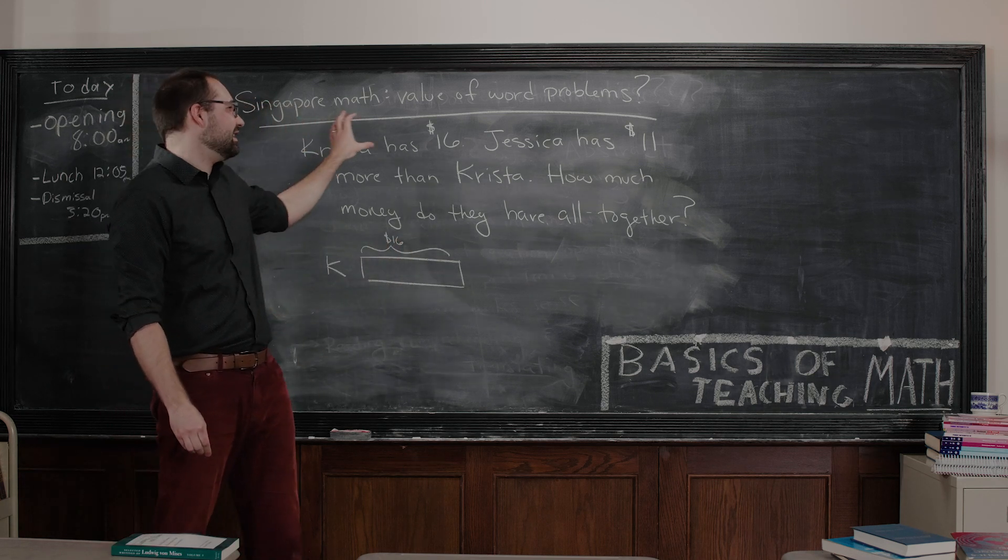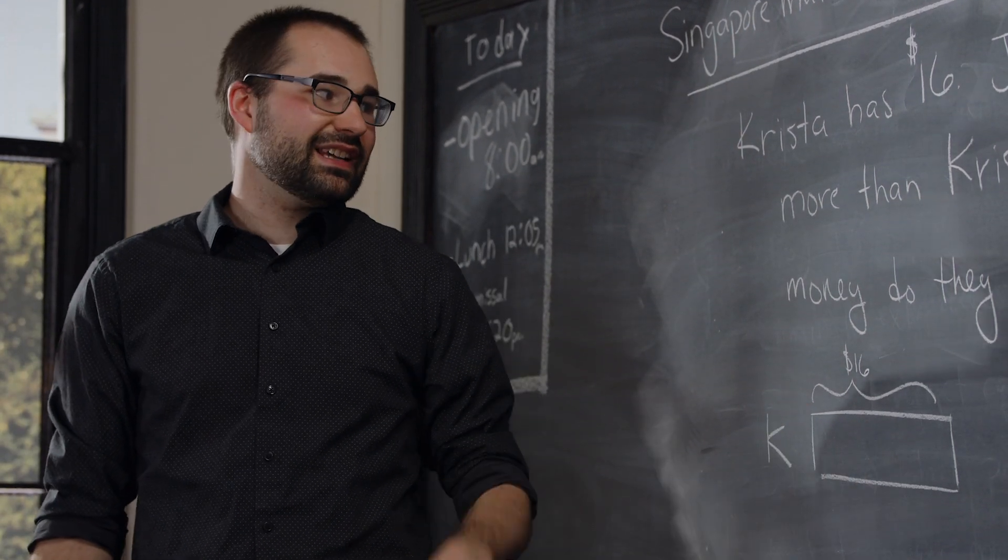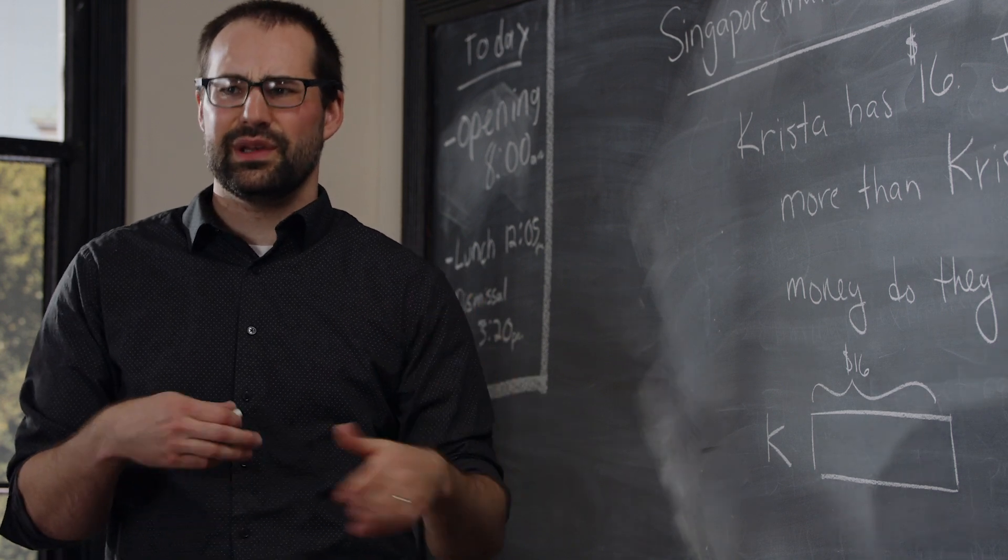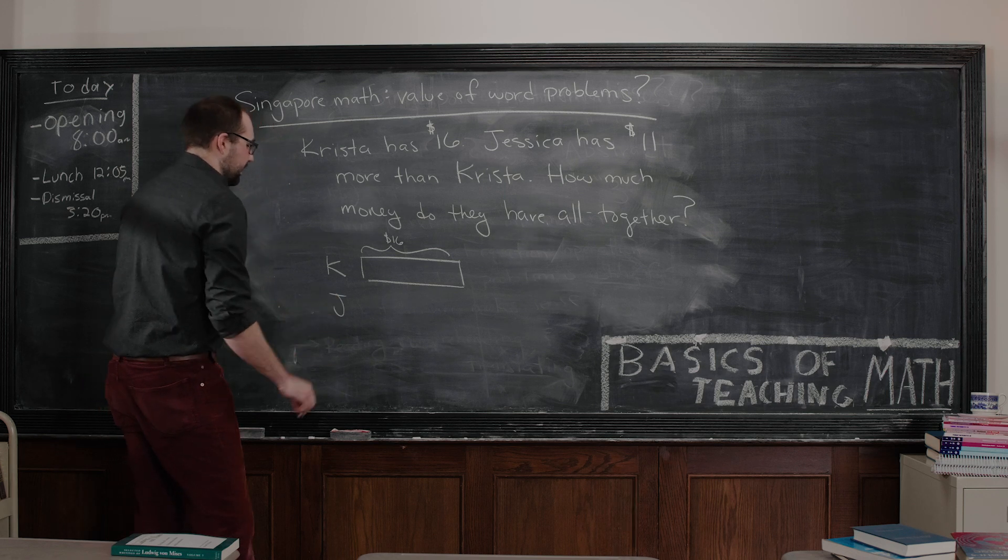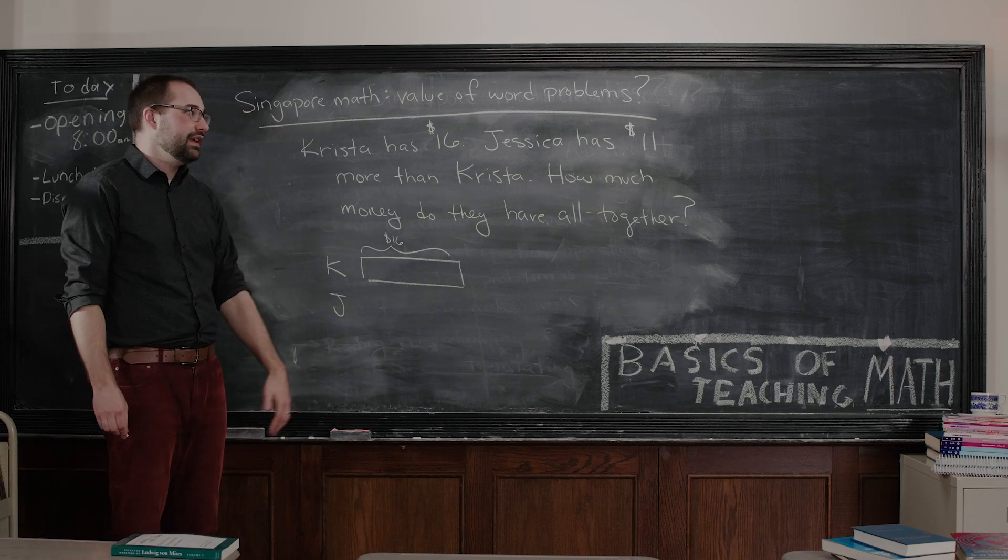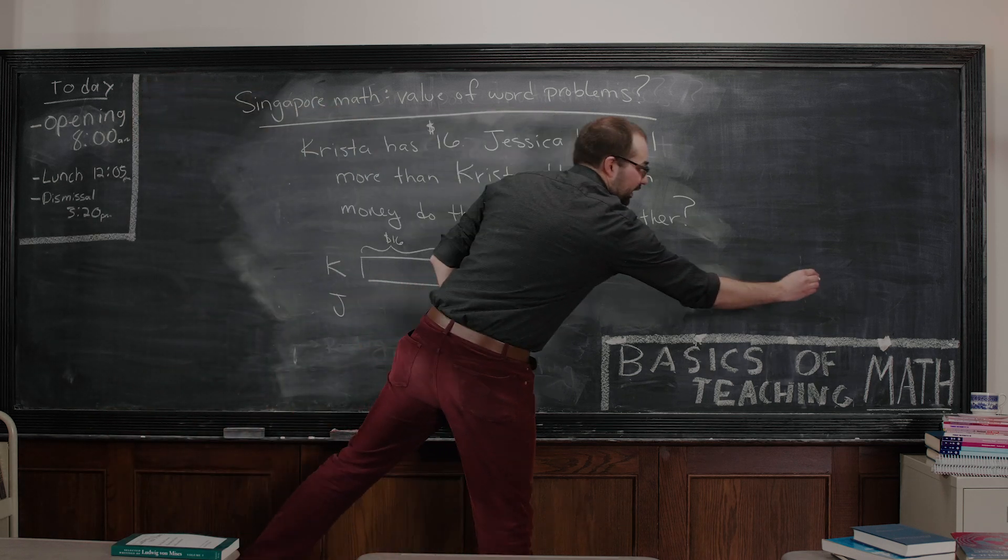What I've done is I've taken the words here and I've translated them into a picture. Jessica has 11 more dollars than Krista. There are all sorts of questions you can ask the teacher around this moment. Do I need to draw Jessica's bar bigger or smaller? We can clearly see it's going to be bigger. How much bigger? Should I just draw it to here? Should I draw all the way across the board?